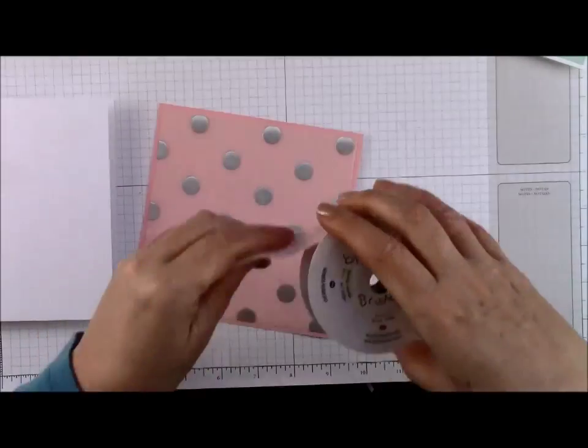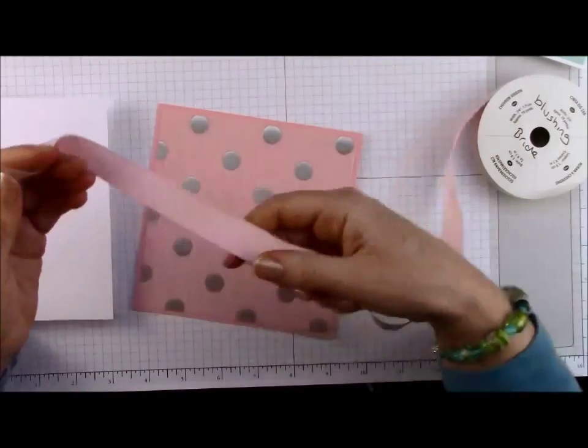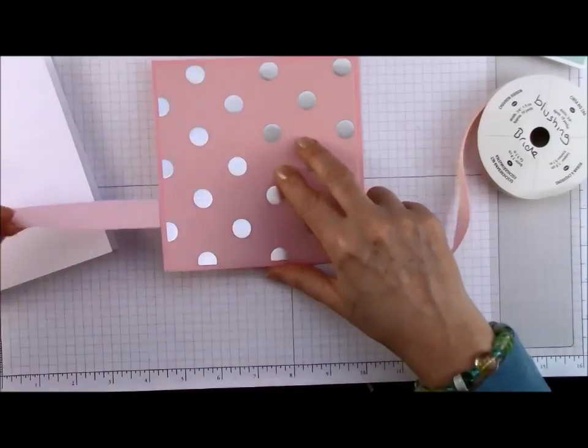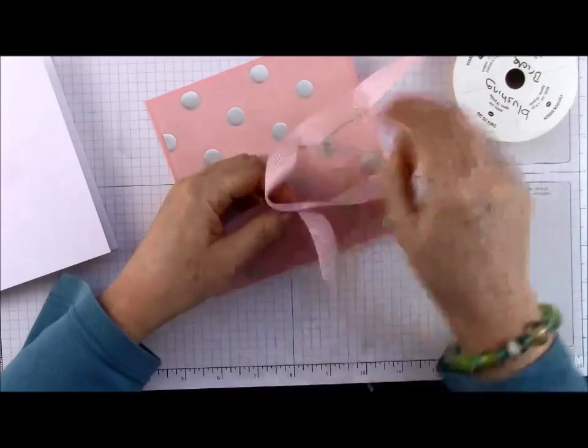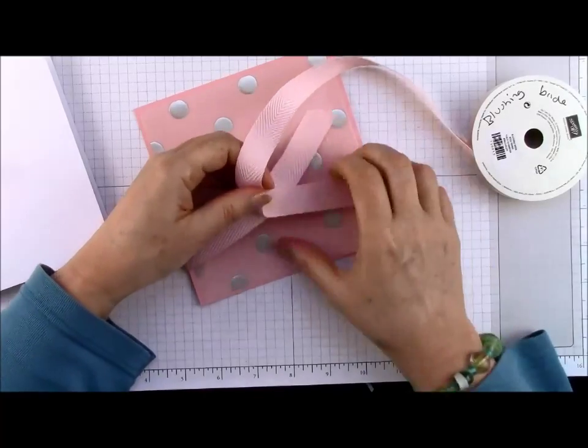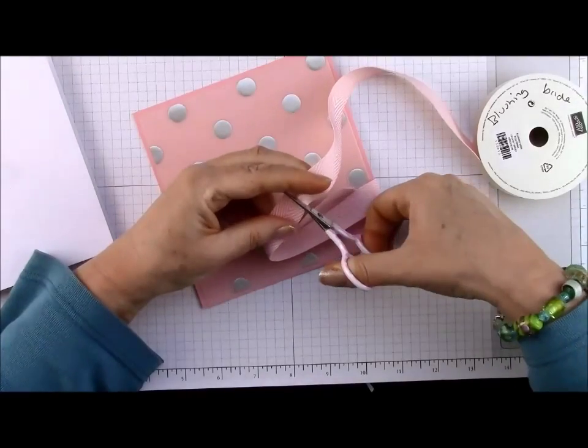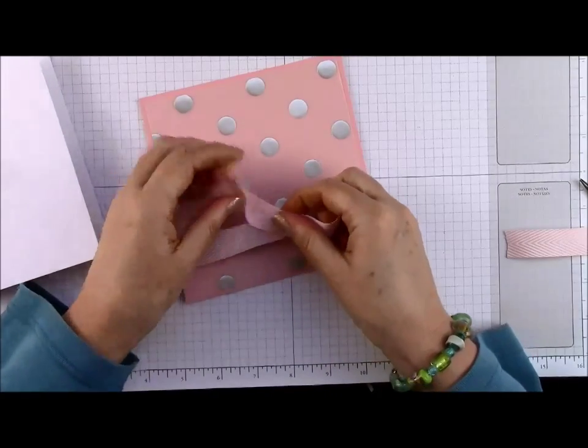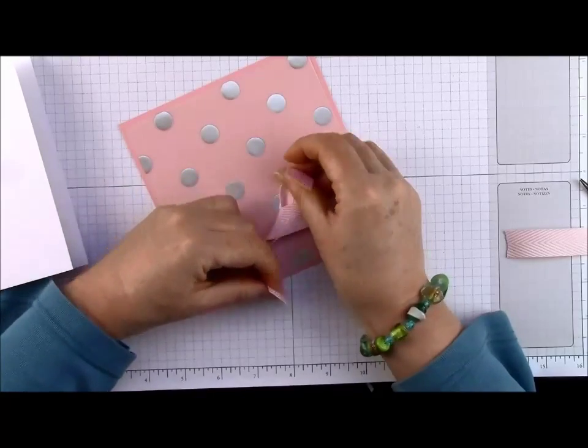Now, I'm going to pop some ribbon on. I'm going to use the Blushing Bride chevron ribbon and I'm going to tie a knot with this. This is gorgeous ribbon, but it seems better suited to knots than bows. So, let's see how much we need. Is that too much? I'm a terrible meanie with my ribbon. I hate cutting more than I need. And then what happens, because I'm so mean, I often undercut it and then I can't do anything so I have to cut a new piece.